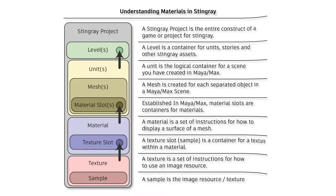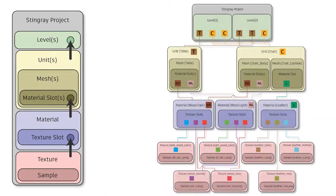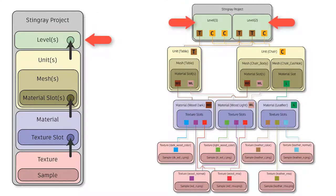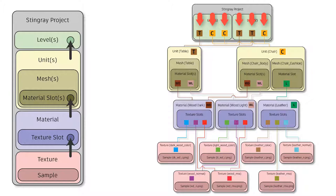So let's actually see how this looks in a project. We have our Stingray project, which has the possibilities of having level one and level two — we could have more, but for this example we'll keep it simple. We've got level one and our units here. Level one has three units, level two has three units as well. This one is going to have one unit that is a table and two units that are chairs — one table, two chairs.